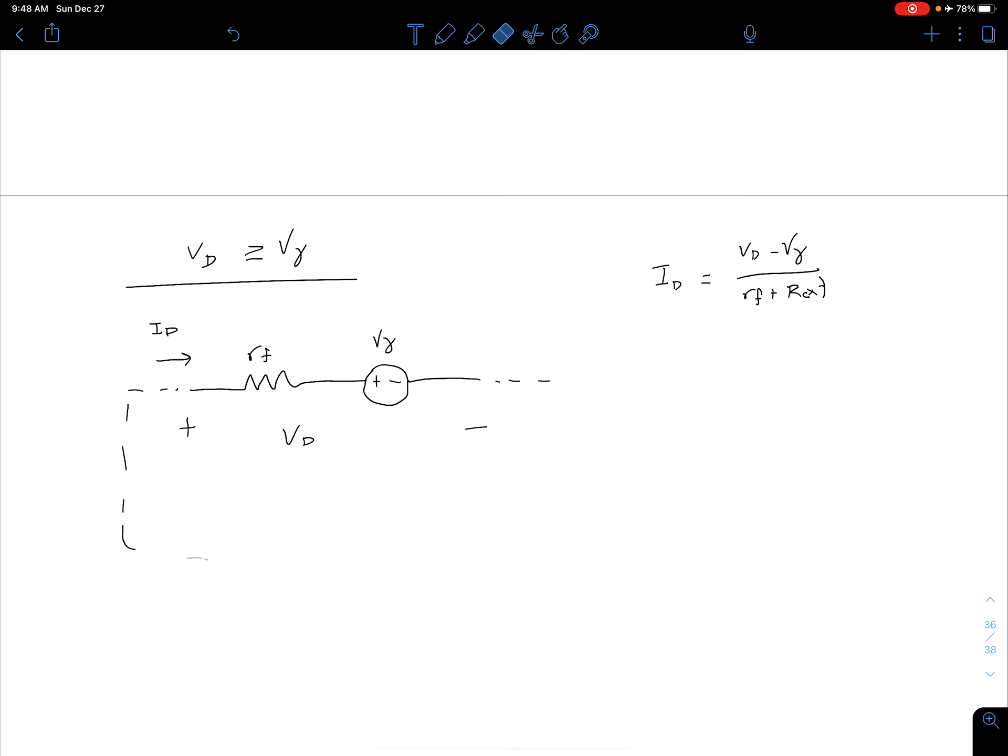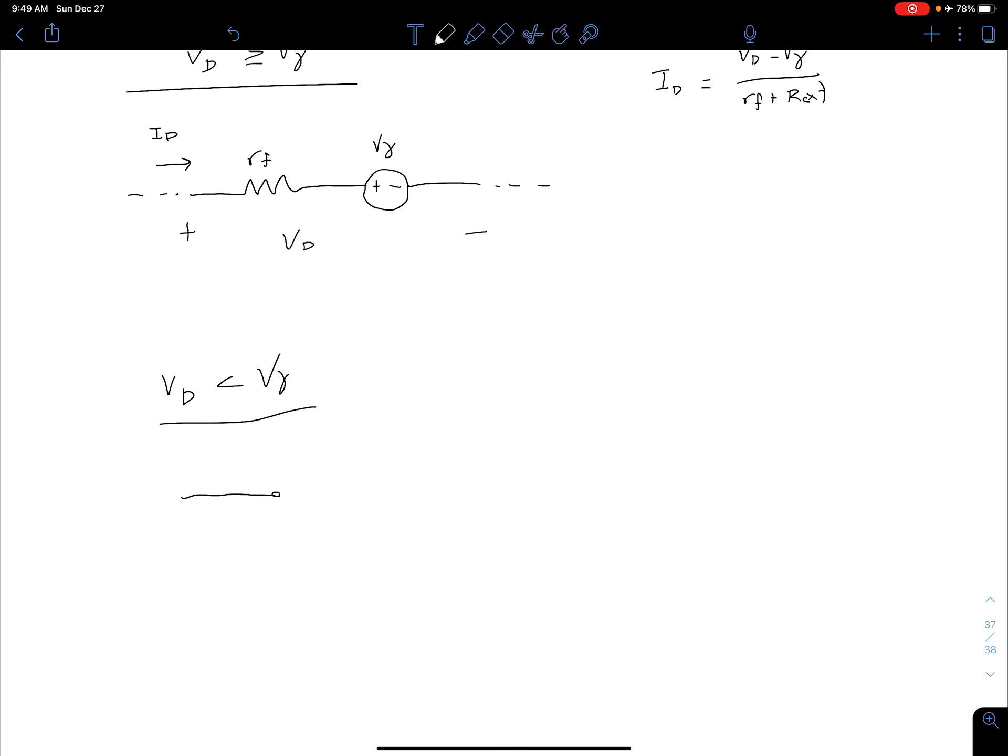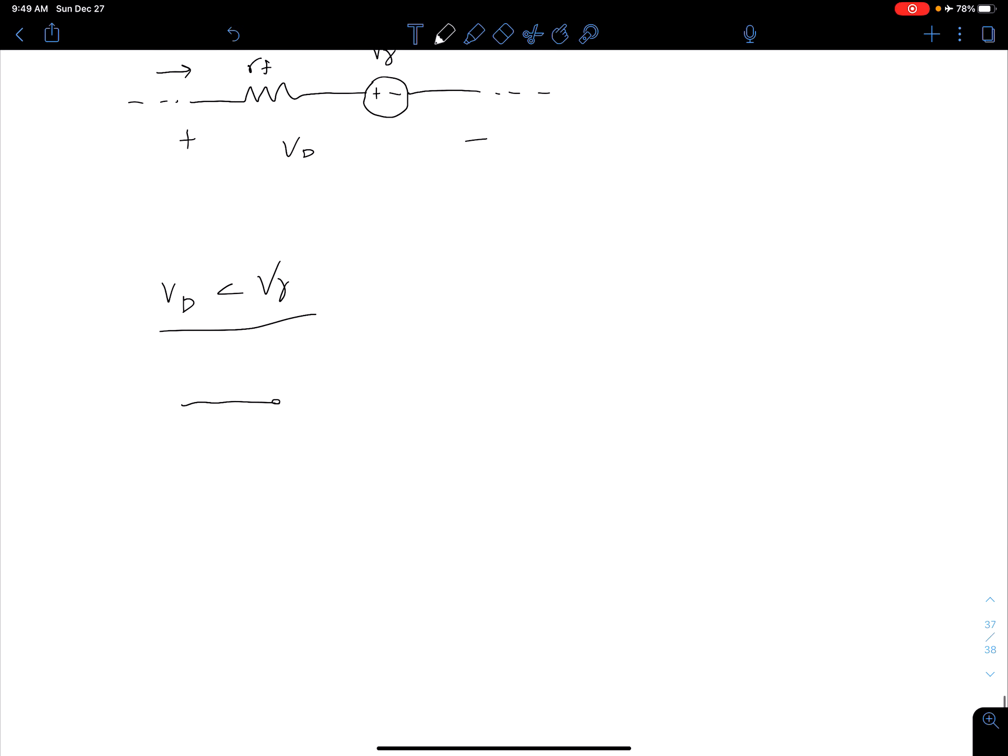And then let's look at our second case, which is if we have our VD less than V gamma. So if we are not able to exceed that cut in voltage. So in this case, we have zero current. So we're on this line here. So zero current, which, of course, we can represent just with an open circuit. So if we're doing our circuit analysis, we go and we replace our diode with just an open circuit. So we have ID, which is, of course, going to be zero because it's an open circuit. And we are still going to have some voltage VD across it, though.